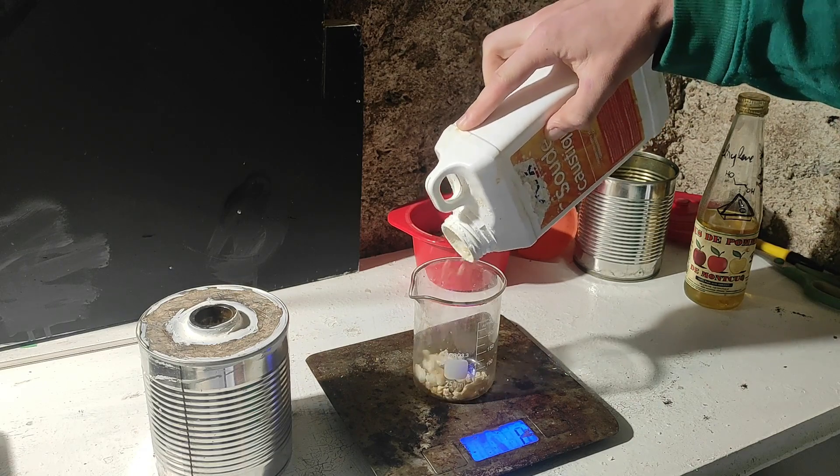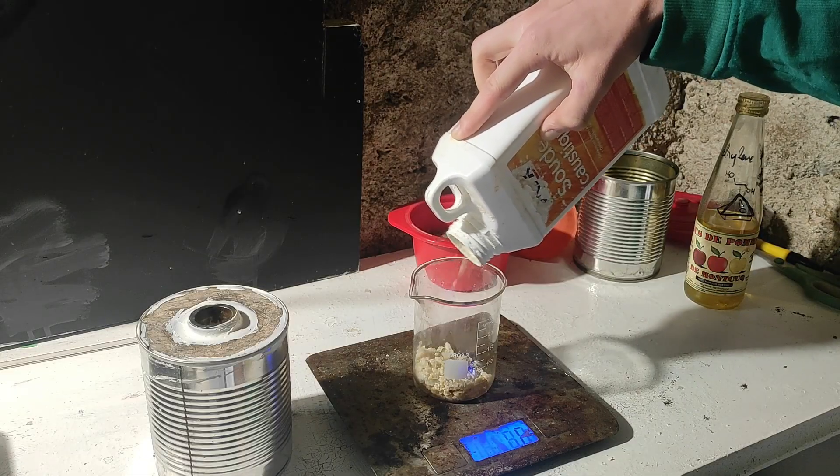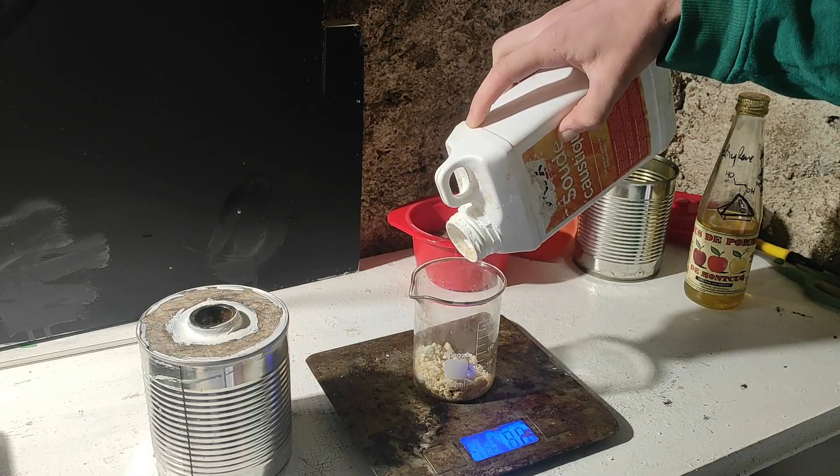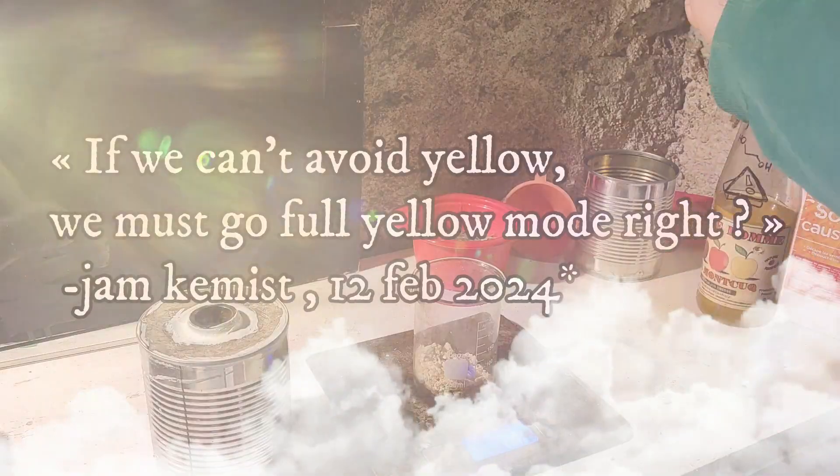For our second reagent, we need some sodium hydroxide, and add a large excess because we will need it later. As you can see, mine is very dirty and looks yellow, but why waste pure reagents when the whole reaction will look yellow anyway? If we can't avoid yellow, we must go full yellow mode, right?